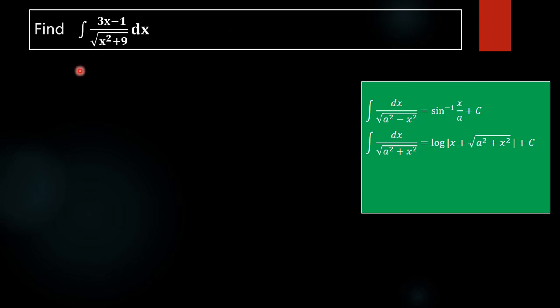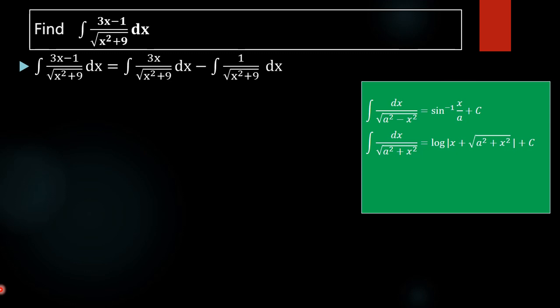We are splitting the numerator. The terms become: integral of 3x divided by square root of x squared plus 9 dx, minus integral of 1 by square root of x squared plus 9 dx.